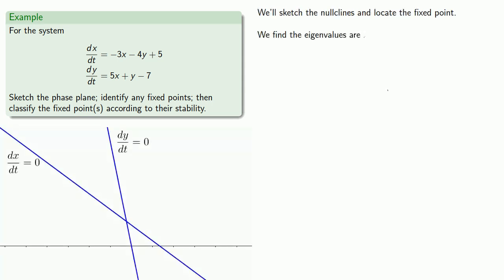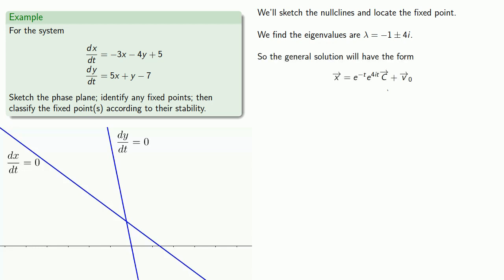We find the eigenvalues, which are minus 1 plus or minus 4i, and so the general solution will have the form where v0 is our fixed point and c is some appropriately chosen constant vector.